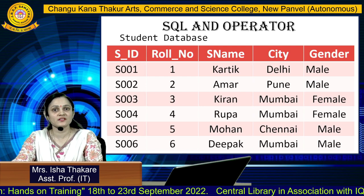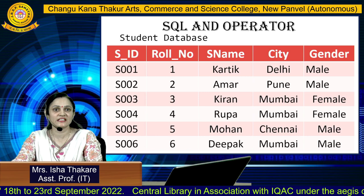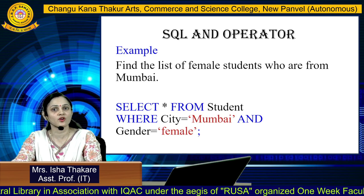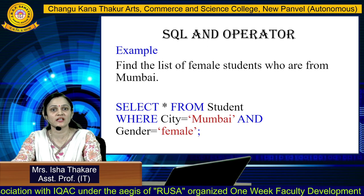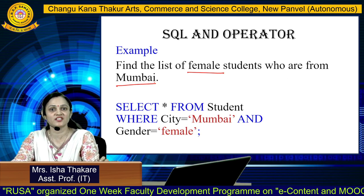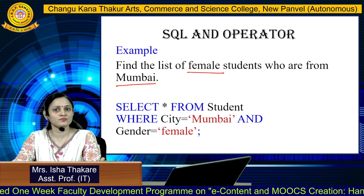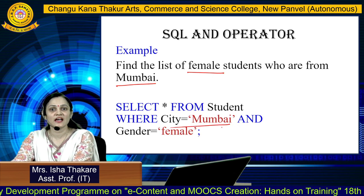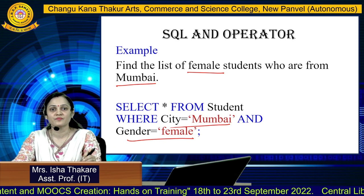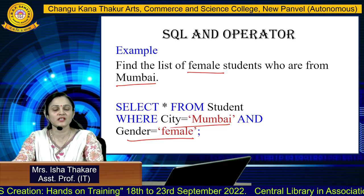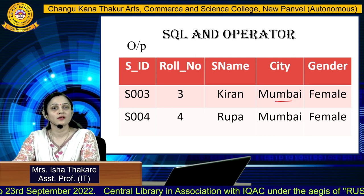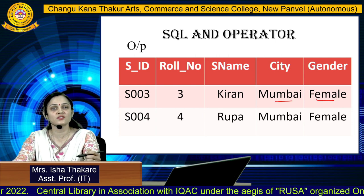Here is a sample database with fields: s_id, roll number, student name, city, and gender, with five or six records. Example: find a list of female students who are from Mumbai. The two conditions are: city = 'Mumbai' AND gender = 'Female'. The query is: SELECT * FROM student WHERE city = 'Mumbai' AND gender = 'Female'. If a student is from Delhi but is female, that row will not be fetched — both conditions must be satisfied. The output shows only students who are female and from Mumbai.